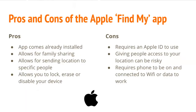The pros and cons of the Apple Find My app. Pros: the app comes already installed, it allows for family sharing, it allows you to send your location to specific people, and it allows you to lock, erase, or disable your device. The cons are that it requires an Apple ID to use — in other words, you need to have an iOS phone. Giving people access to your location can be risky, so make sure it's only people that you trust, and it requires your phone to be on and connected to Wi-Fi or data in order to work.